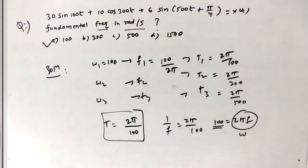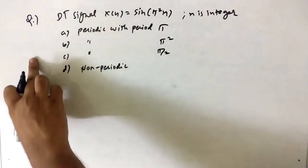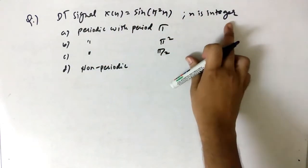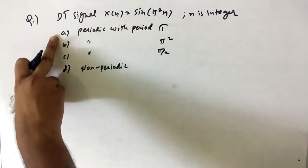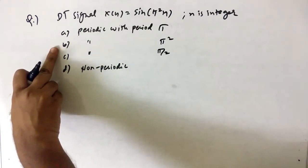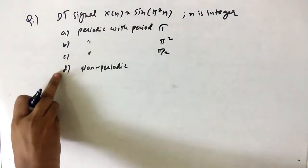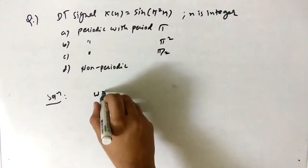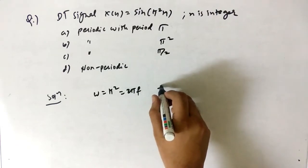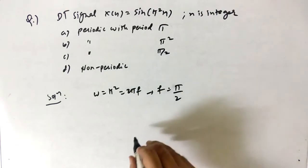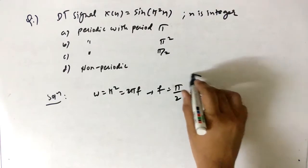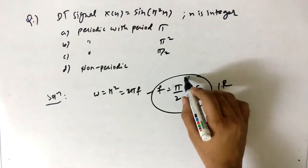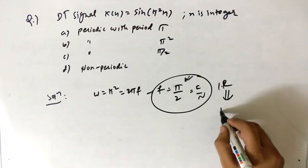The next GATE question: the discrete-time signal x[n] = sin(π²n), where n is an integer. The options are: (a) periodic with period π, (b) periodic with period π², (c) periodic with period π/2, (d) non-periodic. For a discrete-time signal, we check: ω = π², so f = π²/2π = π/2. For periodicity, f = k/N must be rational.